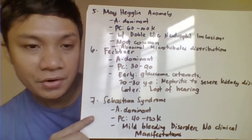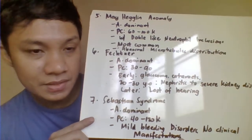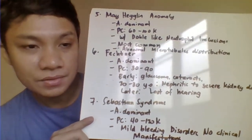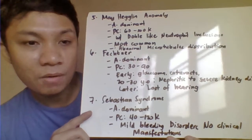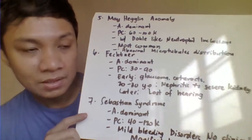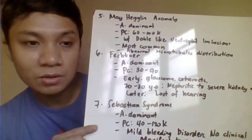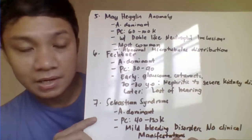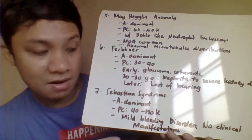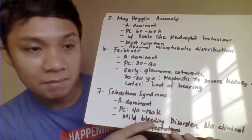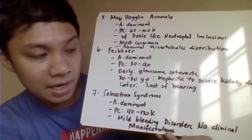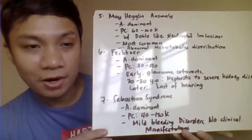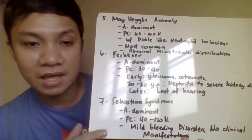Next is Sebastian syndrome, also inherited as autosomal dominant, with a platelet count of 40 to 100,000 — some sources say 120,000. Sebastian syndrome has only minimal bleeding manifestation, and most patients have no clinical bleeding.